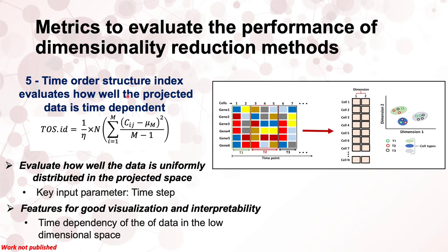The fifth metric, named the time order searcher index, measures how the data in the low-dimensional space is correlated to the different time points at which the original data were collected. It is defined in terms of a function n, which counts the number of variance points spread that does not converge to the mean over each interval of time steps in the Markov process.